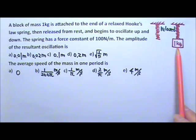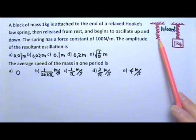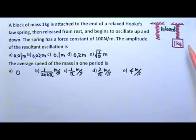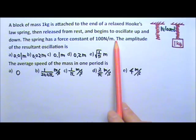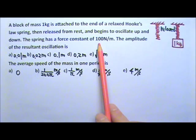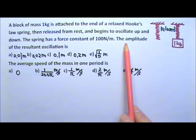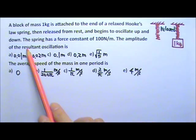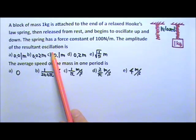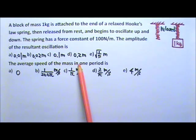A 1 kg block is attached to the end of a relaxed Hooke's Law spring, released from rest and begins to oscillate up and down. The spring has a force constant of 100 N per meter. What is the amplitude of the resultant oscillation? What is the average speed of the 1 kg mass in one period?